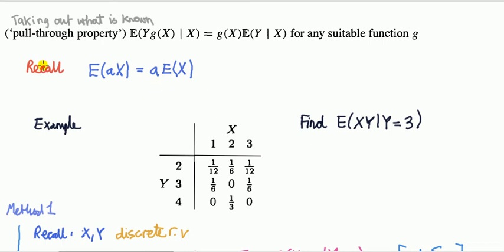We are looking at an example and proof of the pull-through or pull-out property, otherwise known as the 'taking out what is known' property of conditional expectations. Recall that the expected value of a constant times a random variable is equal to the constant times the mean of X.